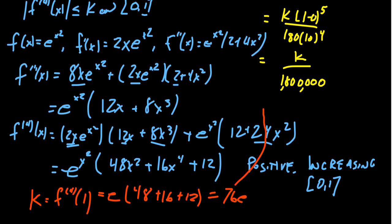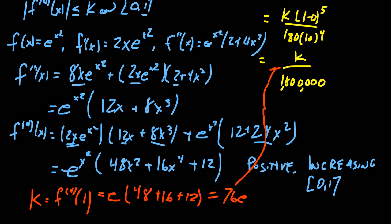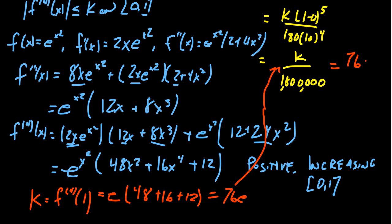Bring it back and plug it in right here. We're going to get 76e over 1.8 million. And so you could simplify that thing. That's not necessary because we want a decimal approximation. So we need to approximate this. We're going to get 0.000115. So this is the worst case scenario. Our error cannot be worse than this.